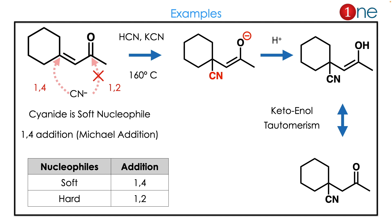Here is an example: you have an alpha-beta unsaturated ketone and you are adding cyanide. Cyanide is a soft nucleophile, so it will undergo 1,4-addition. Then through enol tautomerism, you obtain the 1,4-addition product.